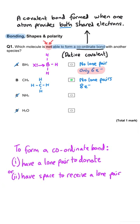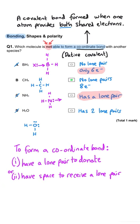Just to check the others: nitrogen in ammonia has got a lone pair so it can donate a pair of electrons into a coordinate bond, and oxygen in water has actually got two lone pairs of electrons which it could potentially use to form a coordinate bond by donating. So B is the correct answer because it can't form the coordinate bond.